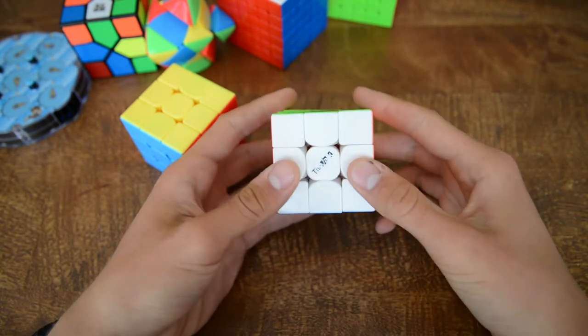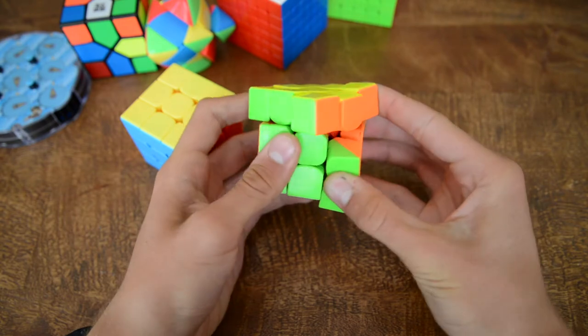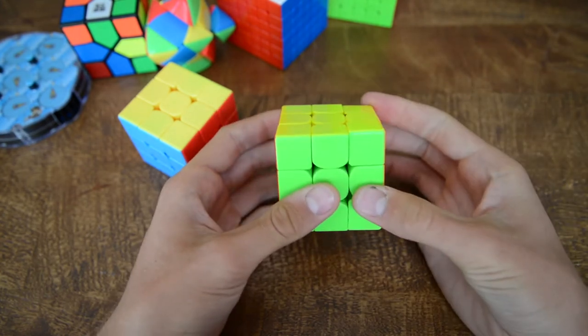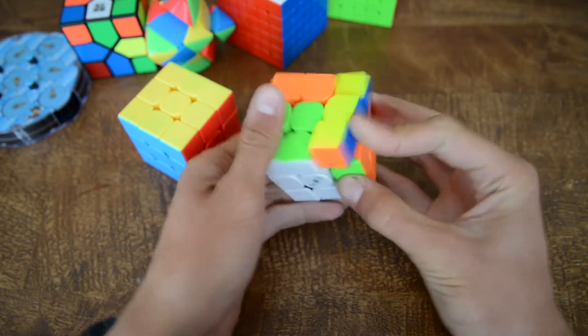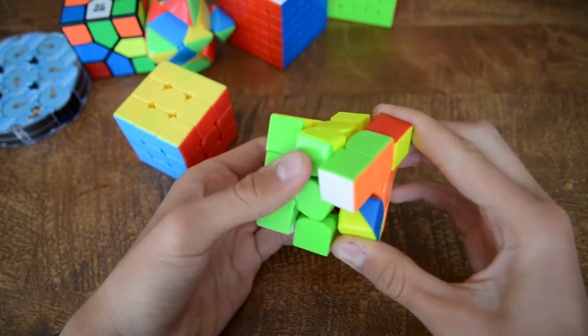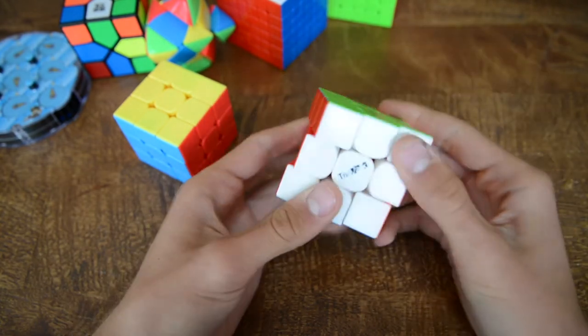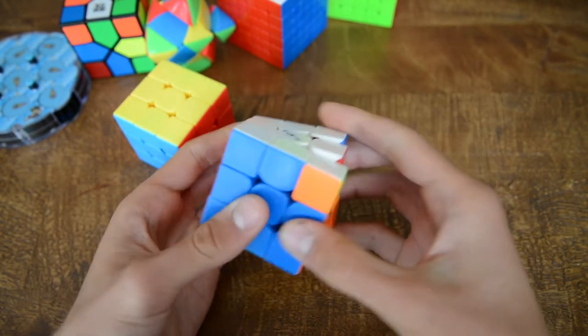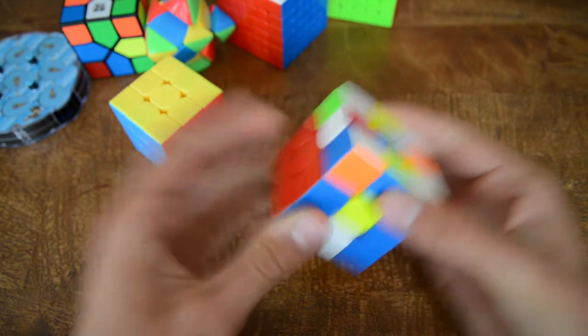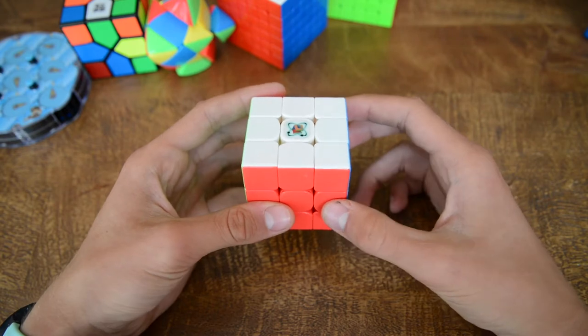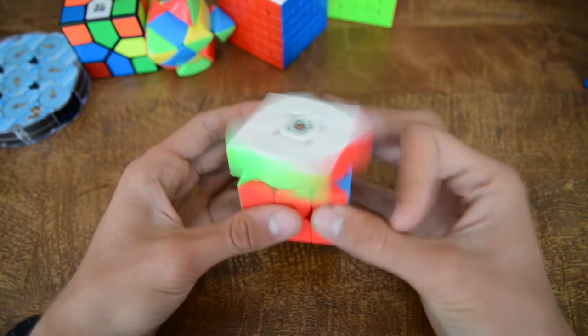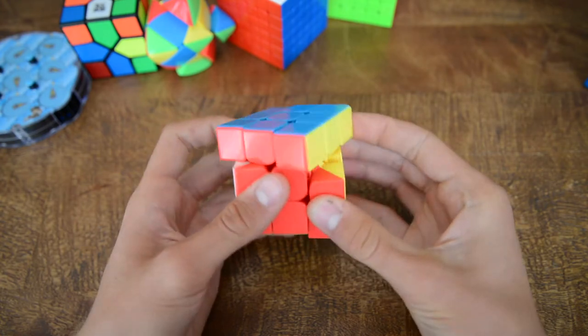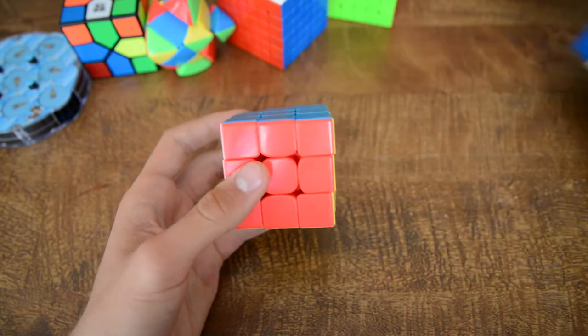Now if you compare it to the Valk. The Valk is a really good puzzle and the only problem that I had with Valk is sometimes it caught the corner, kind of caught the center piece and it was really unsatisfying sometimes to turn this puzzle. And I've heard that magnetic puzzles don't lock up as much as non-magnetic puzzles at competitions because they are more stable. And I've got to admit, it doesn't catch, it doesn't make the stupid unsatisfying thing what the Valk does.